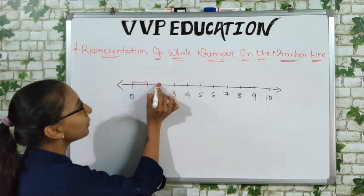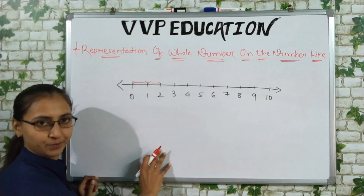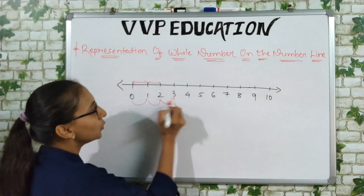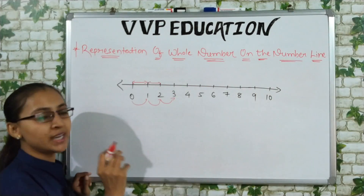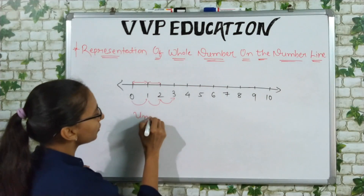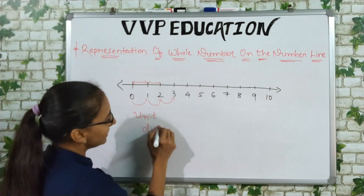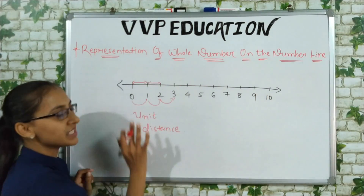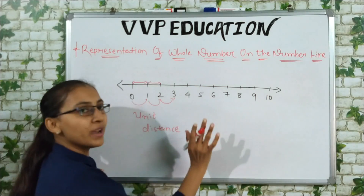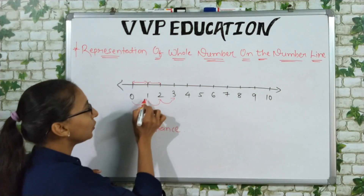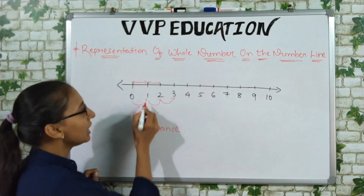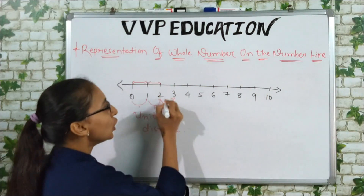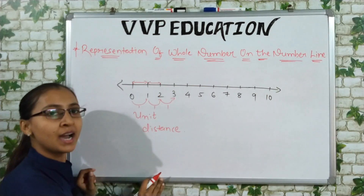You have to draw equal distances between each number. The distance between two consecutive numbers is called unit distance. So 0 to 1 is 1 unit, 1 to 2 is 1 unit, 2 to 3 is 1 unit — the distance between all consecutive numbers is equal and equals 1 unit.